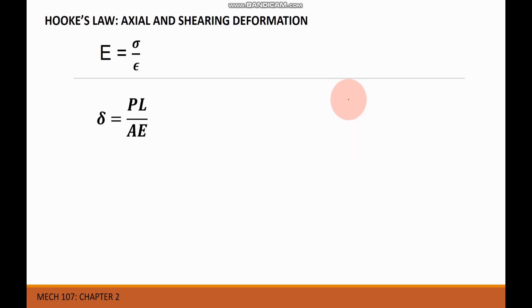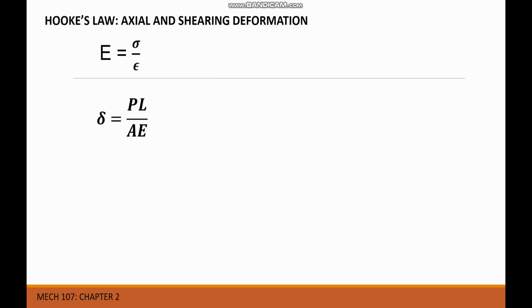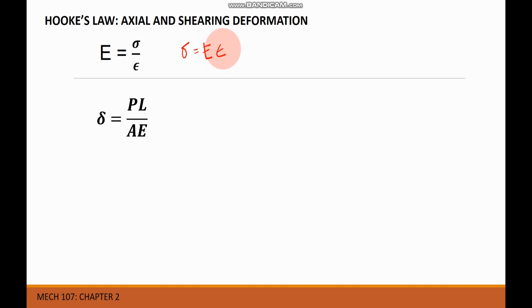The ultimate strength (or ultimate stress) is the highest ordinate of the stress-strain curve. Next is the rupture strength, which is the stress at failure, also called the breaking strength. In Hooke's law, the modulus of elasticity E equals the ratio of stress over strain, so stress equals E multiplied by strain.